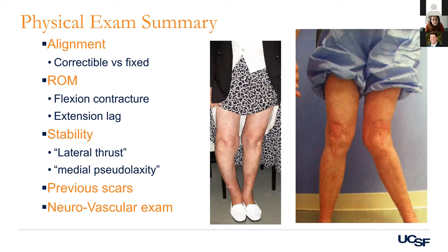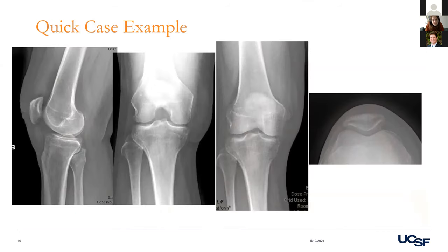In summary for physical exam: look at alignment, range of motion, stability, prior scars, and perform a neurovascular exam. Those are the key elements of the physical exam.